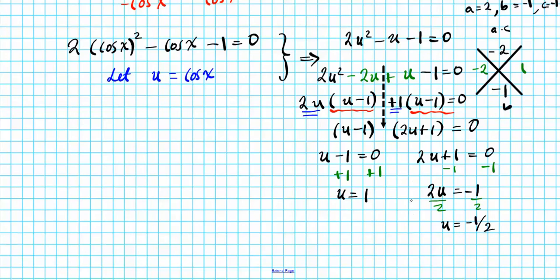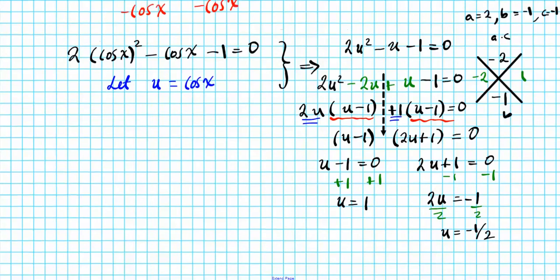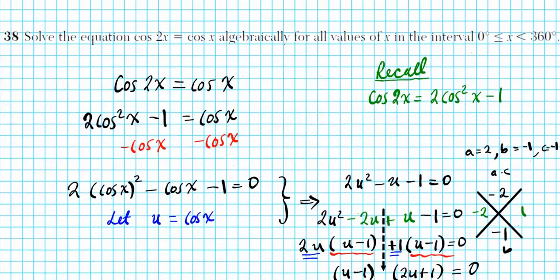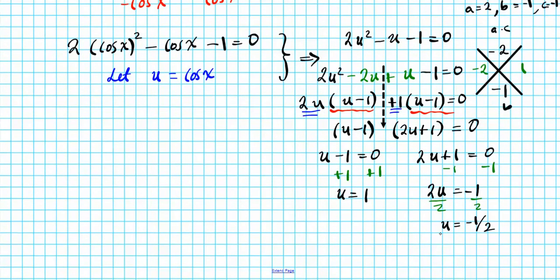So the question is, are we done? Have we solved the problem? Well, let's go back to the question. What does the question ask us to do? The question asks us to solve this equation for all values of x. We have just found u, so we're not done yet. In order to finish this whole process, we have to re-substitute cosine x for u. So u sub and then resub, and then you solve.